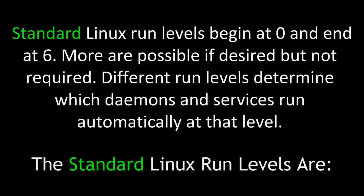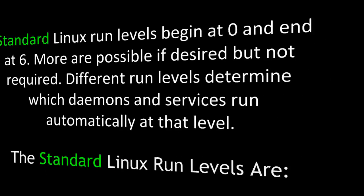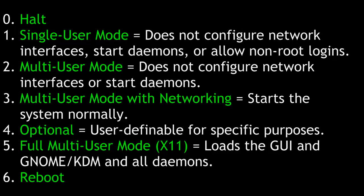Standard Linux run levels begin at 0 and end at 6. More are possible if desired but not required. Different run levels determine which daemons and services run automatically at that level. The five standard Linux run levels are: 0 is halt, 1 is single user mode — it does not configure network interfaces, doesn't start daemons, and doesn't allow non-root logins. 2 is multi-user mode and does not configure network interfaces or start daemons. 3 is multi-user mode with networking, where you boot to a command prompt with daemons and networking but no graphical interface, no GNOME or KDM.